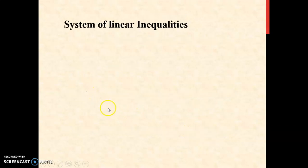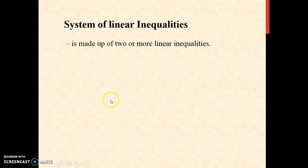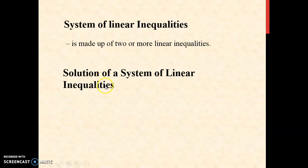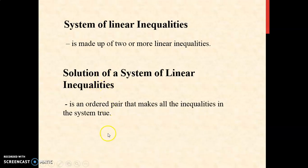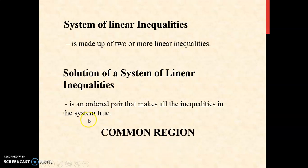What is a system of linear inequalities? This is made up of two or more linear inequalities. The solution of a system of linear inequalities is an ordered pair that makes all the inequalities in the system true. The common region is the illustrative representation of the solution of the given system of linear inequalities.